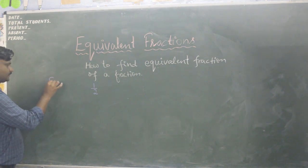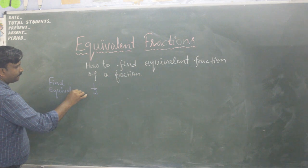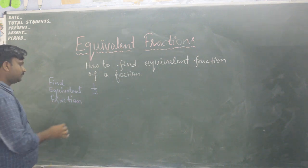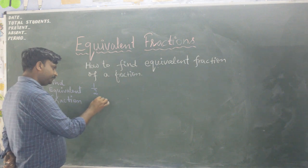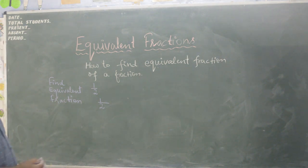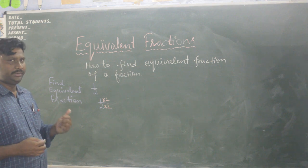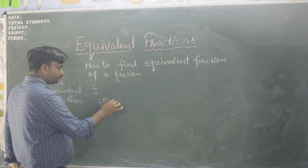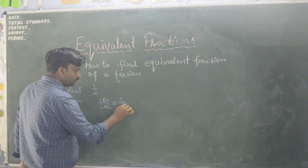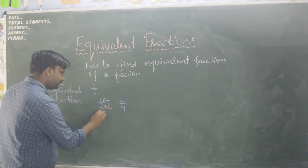Find equivalent fractions for one upon two. What was the rule? By multiplying denominator and numerator with the same number we can find equivalent fractions. Let us first multiply by 2 — multiply both numerator and denominator: 2 times 1 is 2, 2 times 2 is 4. So the equivalent fraction is two upon four.